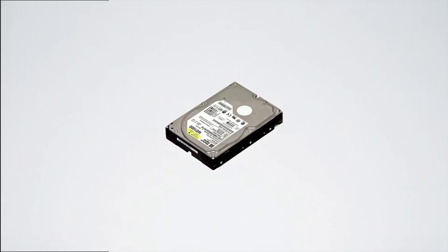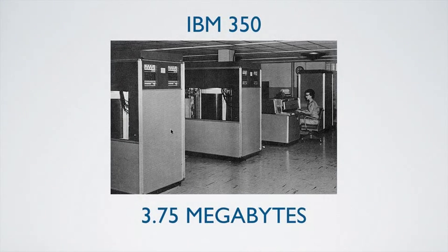Let's take a time trip back to 1956. This is one of the very first commercially available storage units, or hard disk drives. It had multiple platters, multiple disks. The IBM 350 in 1956 was used by the U.S. military and it had a total storage capacity at that time of 3.75 megabytes — just under 4 megabytes. At that time people were saying ooh and ah; that was very impressive.